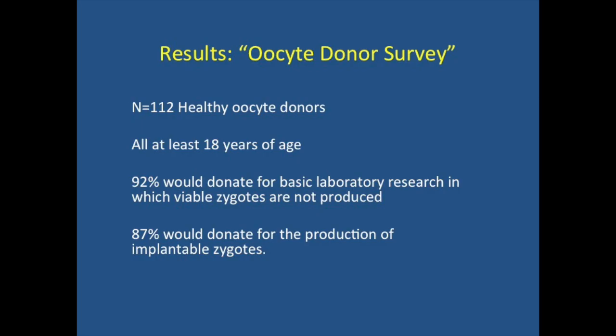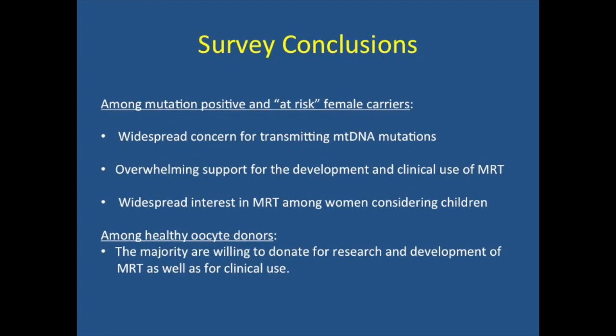Regarding the healthy oocyte donor survey: there were 112 women, and 92% said they would donate for basic laboratory research in which viable zygotes are not produced. 87% said they would donate for the production of implantable zygotes. So among mutation-positive and at-risk female carriers, there's widespread concern for transmitting these mutations, realizing that mutations vary from less severe to very severe. There's overwhelming support for the development and clinical use of MRT, and widespread interest in MRT among women considering having children. Among healthy oocyte donors, the majority are willing to donate for research, development, and clinical use of MRT.